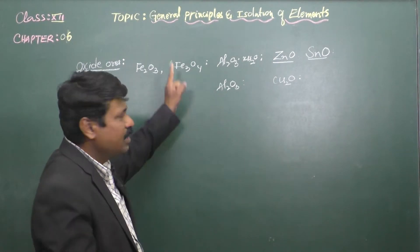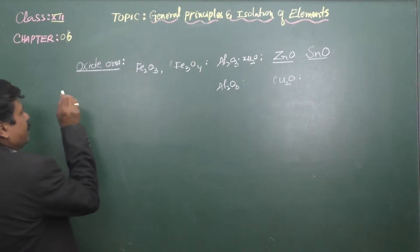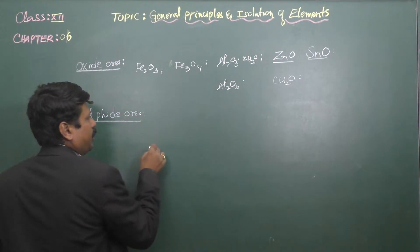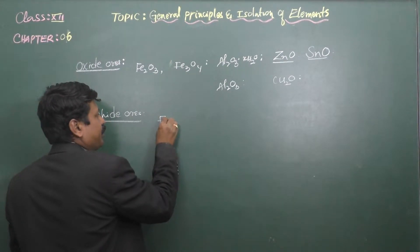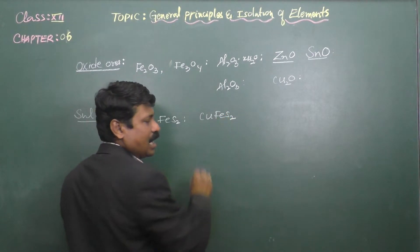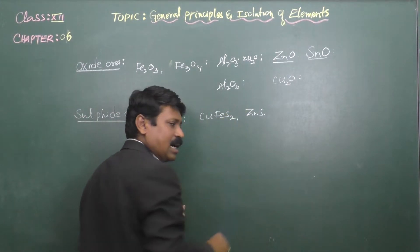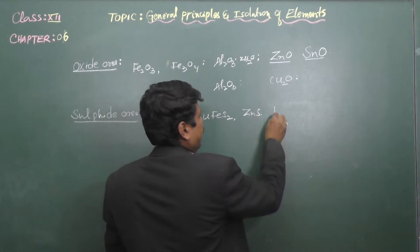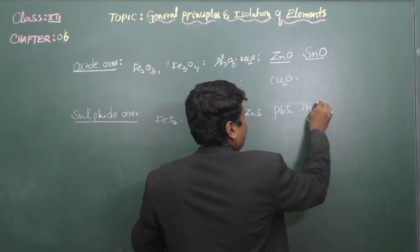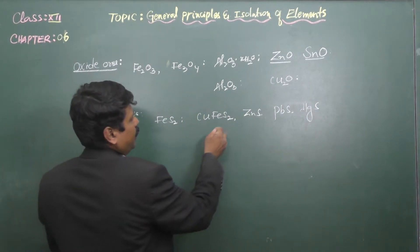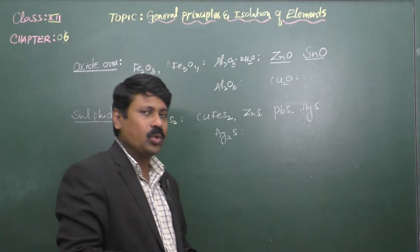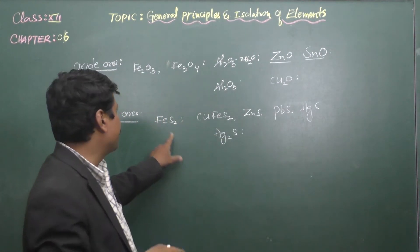The next type is sulfide ores. Examples include: FeS₂ (iron pyrite), CuFeS₂ (copper pyrite), ZnS (zinc blende), PbS (galena), HgS (cinnabar), and Ag₂S (silver glance). These are important ores that occur in the form of their sulfides.